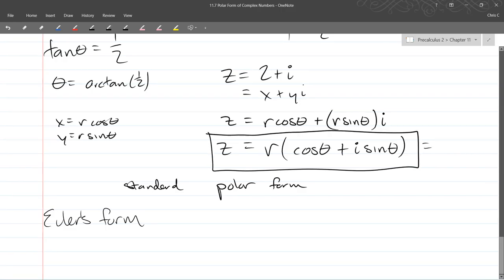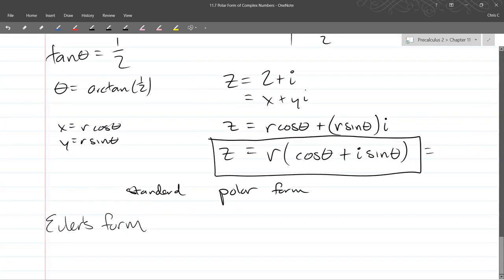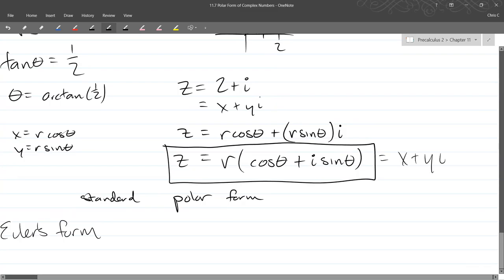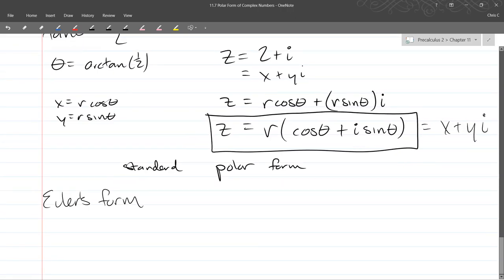So in the standard form, this was x plus yi. We just turned x and y basically into r's and thetas very carefully. That's all we did at the end of class yesterday. Euler's form is a little bit different.